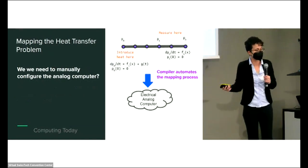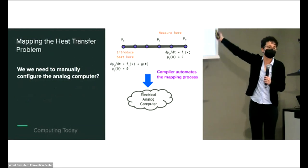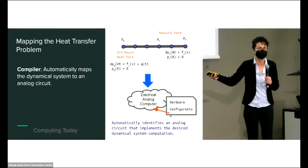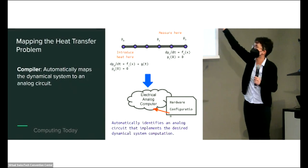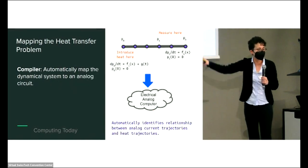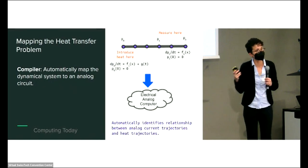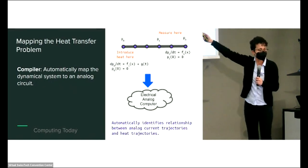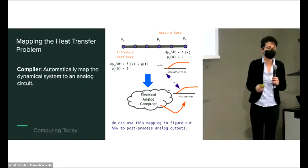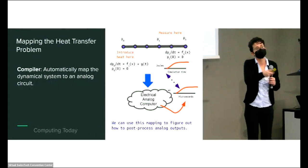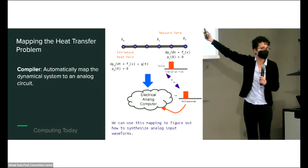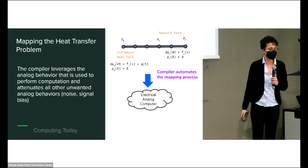You can use a compiler to automate the mapping process. This was the focus of a lot of my prior work. The compiler takes your dynamical system, your differential equations, and maps it to the analog substrate. It automatically identifies an analog circuit that implements the desired dynamical system computation and identifies the relationships between the analog current trajectories in the circuit and the heat trajectories in your starting system.